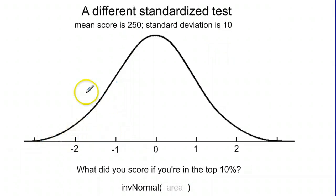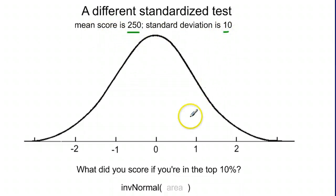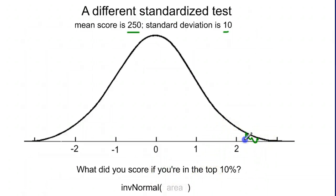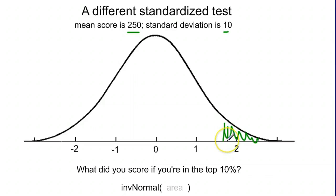Similar example here — a different standardized test. Mean score is 250, standard deviation is 10. It wants to know what score you got if you were in the top 10%. If we shade the top 10% of this curve, we want to know what z-score that corresponds to first, and then eventually figure out what score that corresponds to.